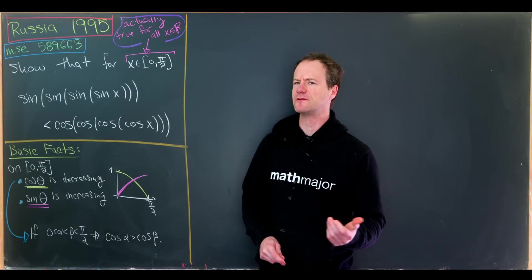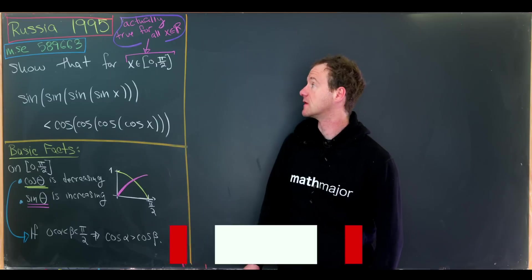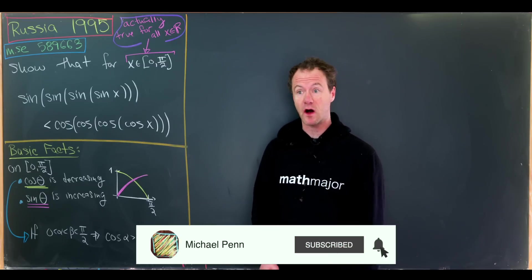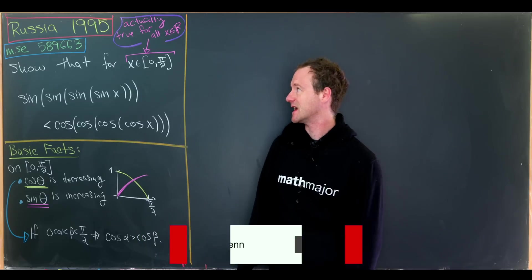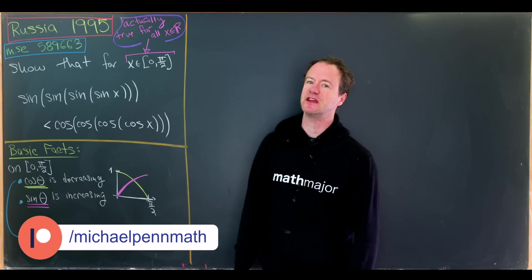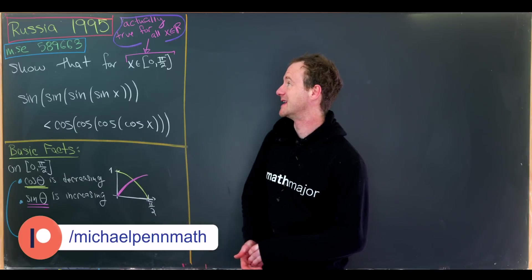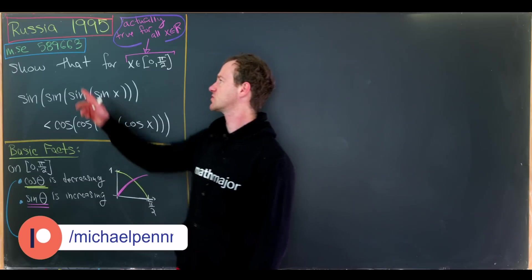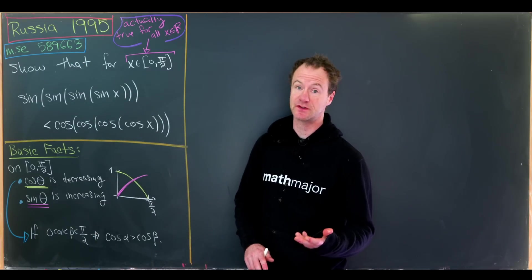Everyone loves a good iteration of a trigonometric function, and today we're going to look at an inequality involving the iterations of sine and cosine. This is a super famous inequality that was on a Russian math Olympiad in 1995, and it's also described in a math.stackexchange post.